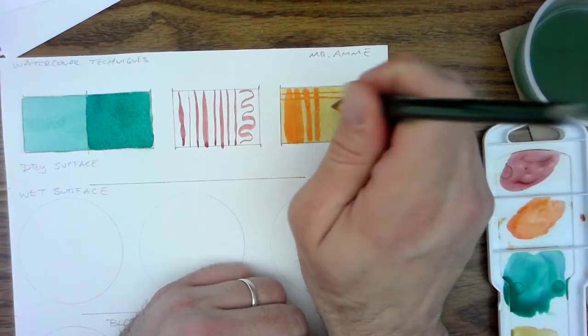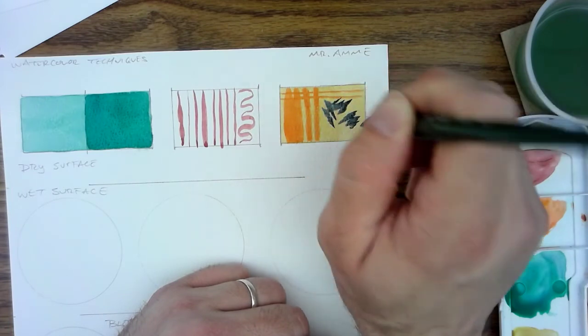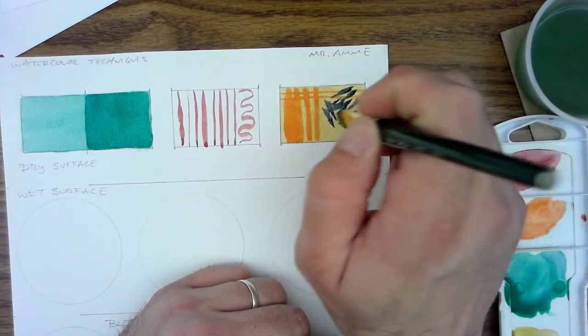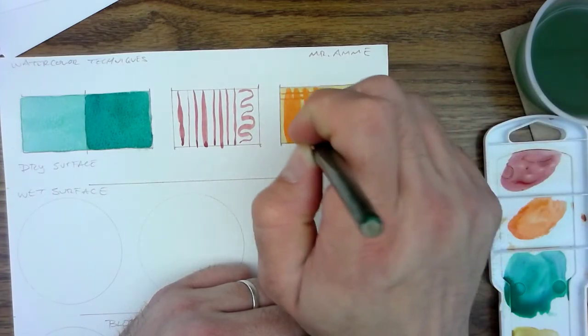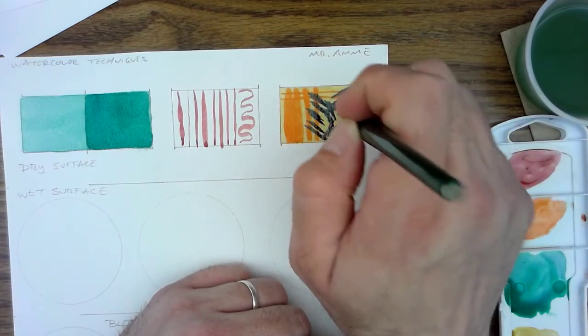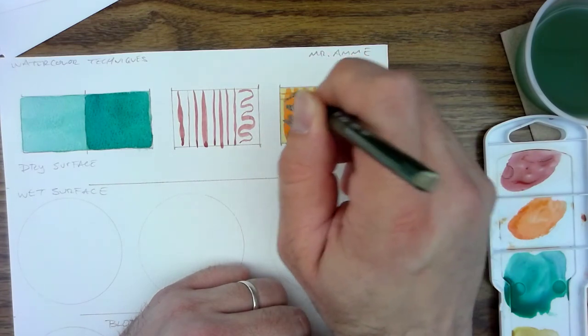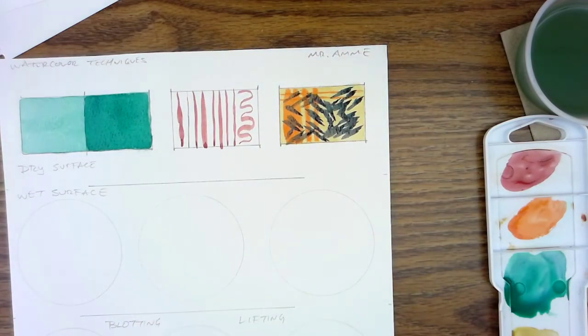And I wanted to kind of create some texture in there just using the brush in different ways. So really just kind of see what happens when you're working with a wash on a dry surface.